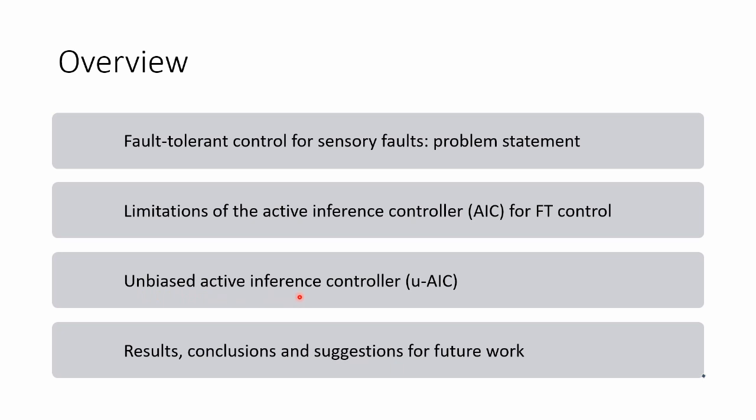Unbiased Active Inference is our novel contribution to overcome all the mentioned limitations. We're going to explain it clearly and show how it relates to different control architectures and how to use it for fault-tolerant control. Finally, we'll have some results and conclusions, and then some suggestions for future work.